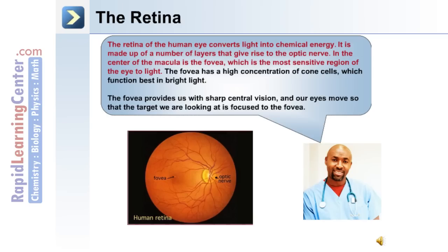Located deep in the posterior portion of the eye is the retina. The retina converts light into chemical energy and is made up of a number of layers of cells that give rise to the optic nerve. In the center of the macula is the fovea, which is the most sensitive region of the eye to incoming light. The fovea has a high concentration of cone cells that function best in bright light, and provides sharp central vision; our eyes move so that the target we are looking at is focused onto the fovea.